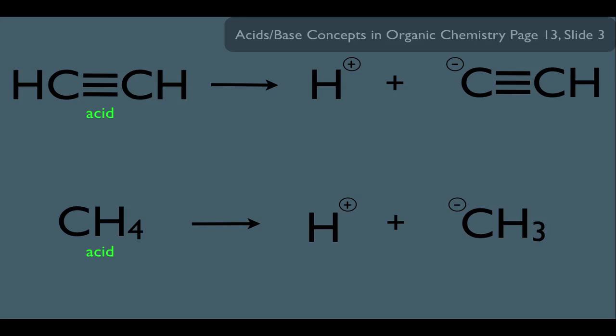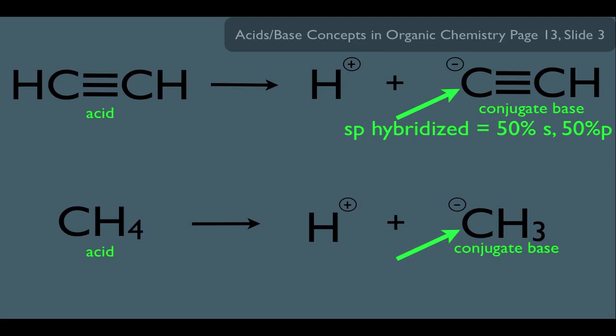Now, what we do most of the time when we're comparing acid strengths is we like to look at the conjugate base. And let's analyze each one here. First, let's analyze this guy right here. Let's determine his hybridization. He happens to be sp hybridized, which means that his orbitals are half s and half p. Let's look at the bottom conjugate base. His hybridization is sp3 hybridized, which means he's 1 part s, 3 parts p, or 25% s, 75% p.